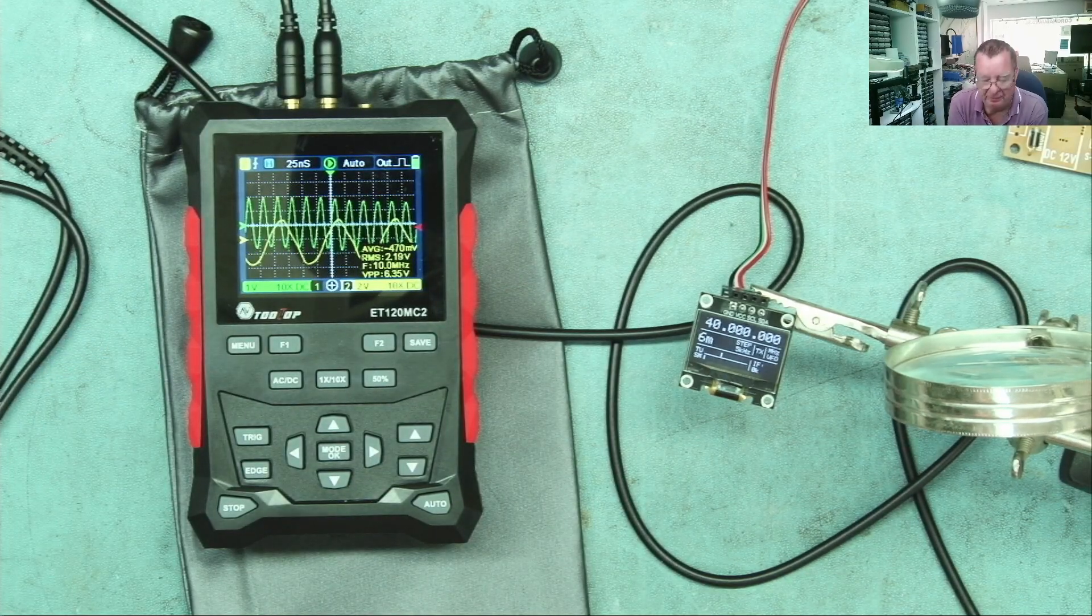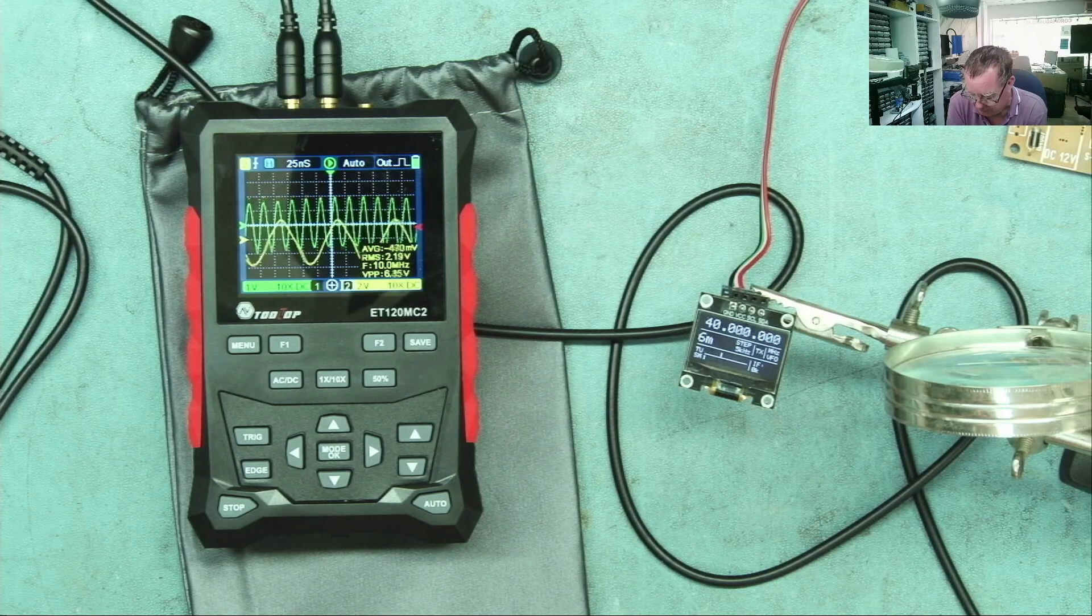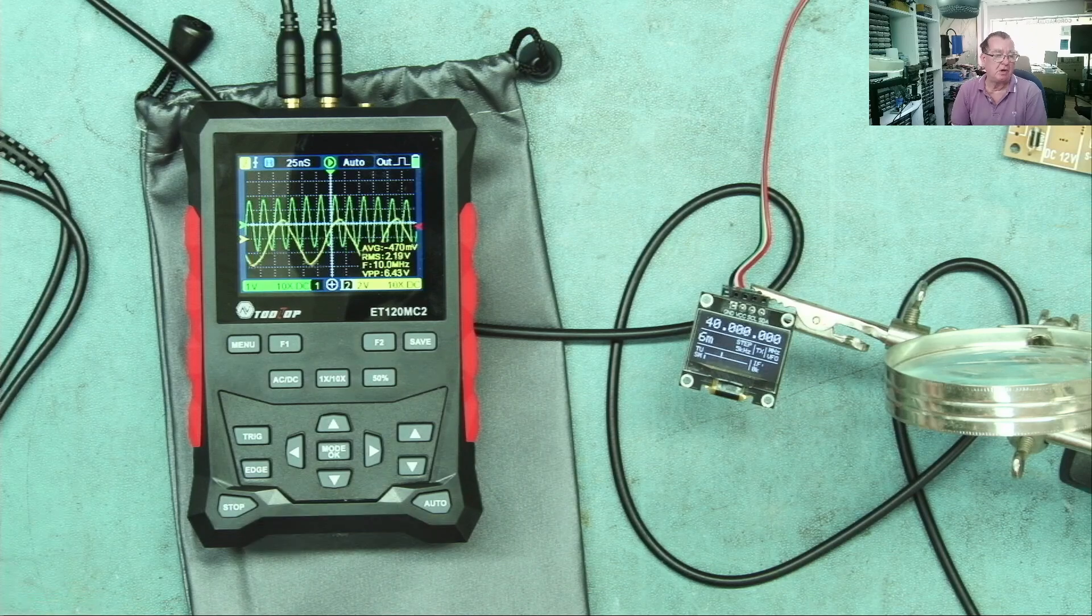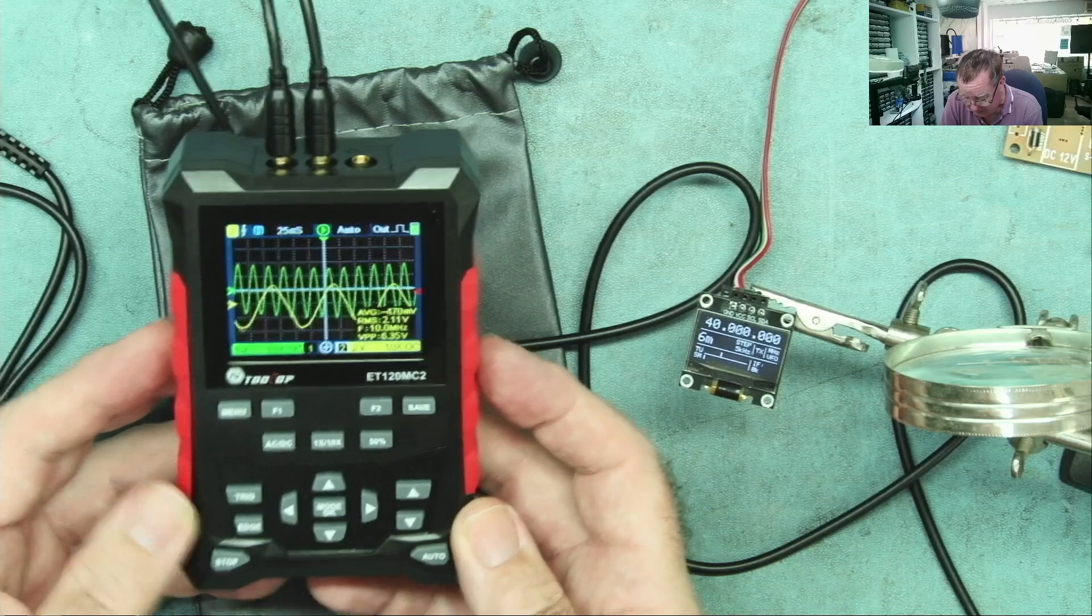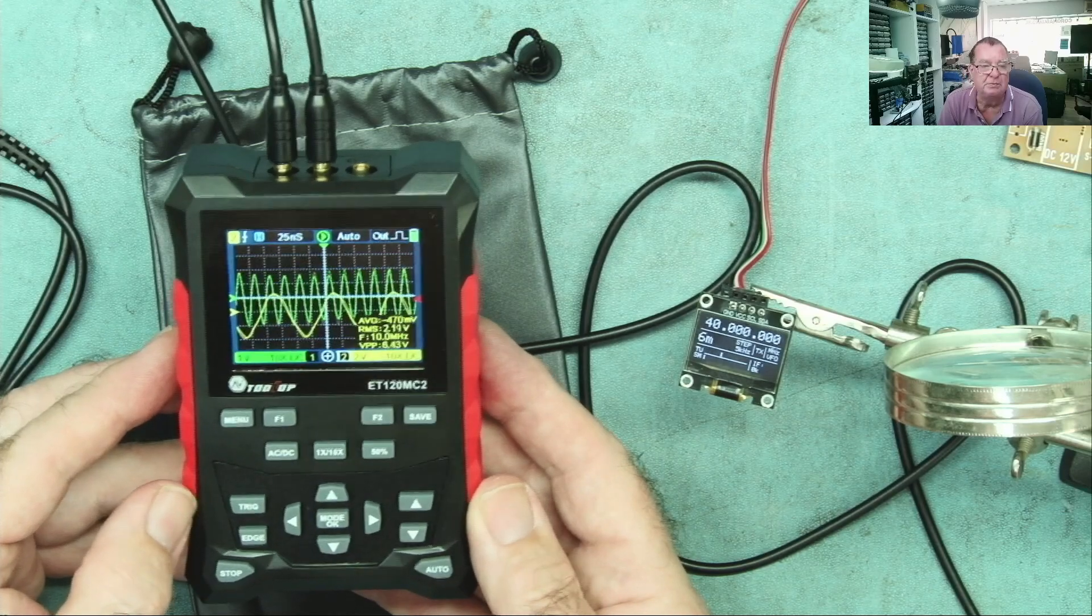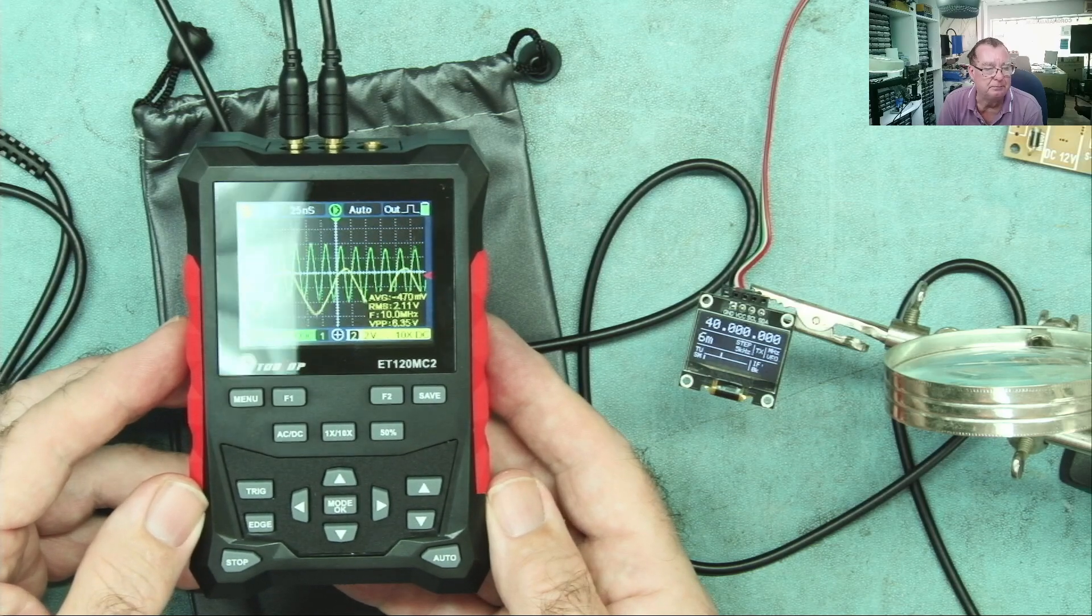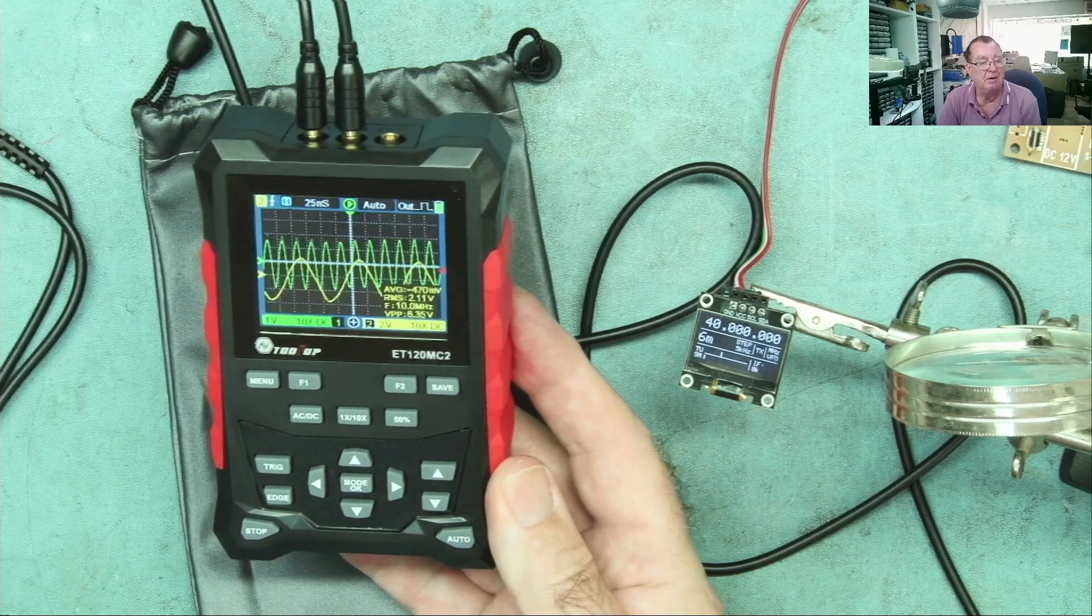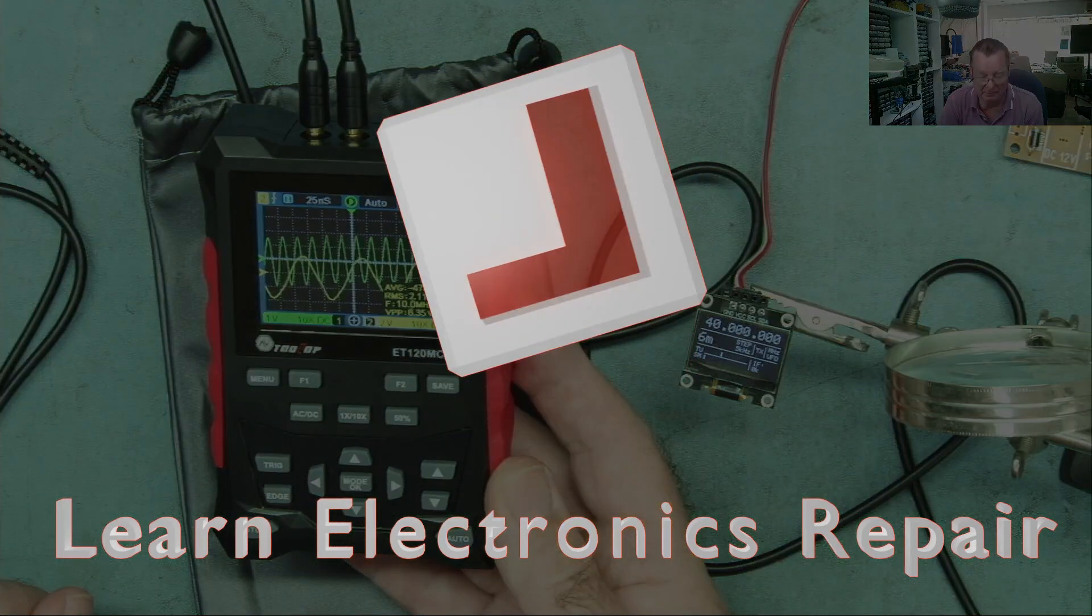That's the ET120 MC2, guys. Get into the comments below. Let me know what you think of this one. I certainly would not complain if it turned up in my Christmas box or something like that. If I didn't have a scope and I just wanted something especially portable like this, it's what I would consider. Maybe you have the opinion if it doesn't work at the rated spec then it shouldn't be bought, and I can understand that point of view. All I can really do is show you what this actually does. Hope you enjoyed that, and I look forward to seeing you all soon again on Learn Electronics Repair. Ciao for now, guys.